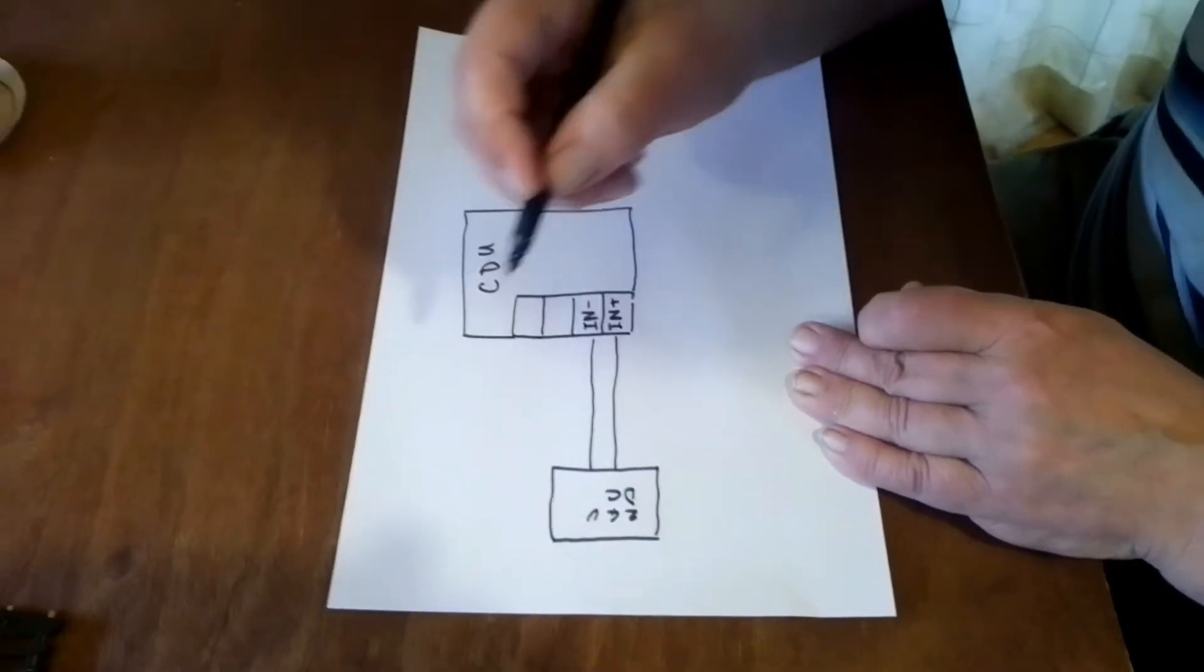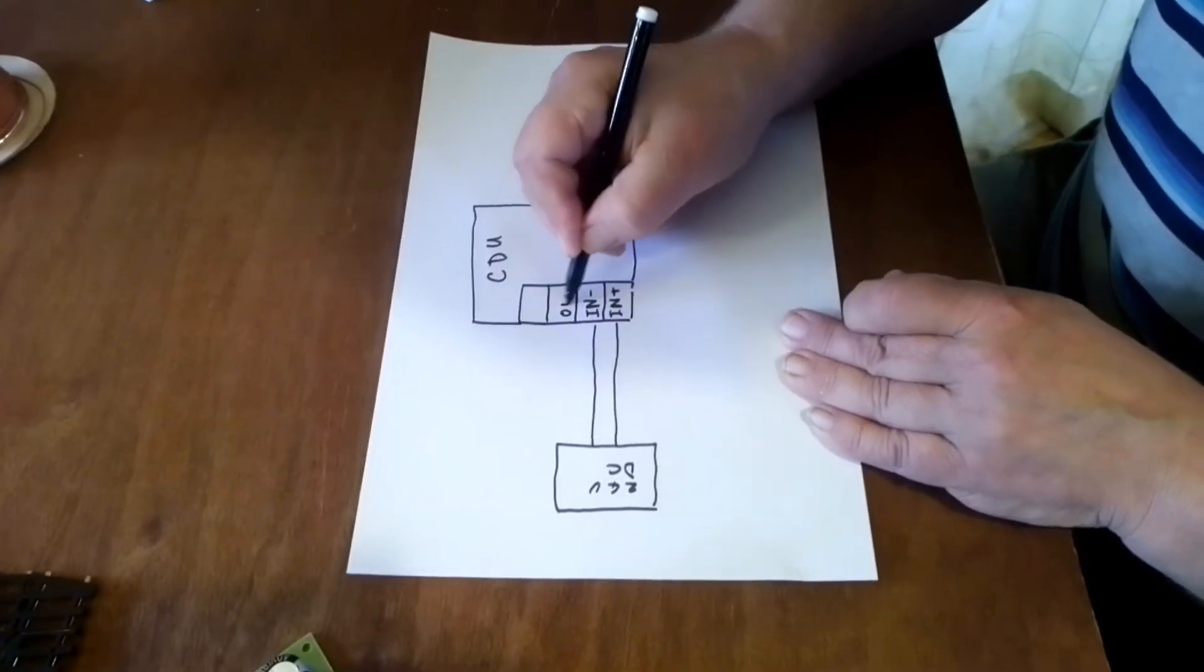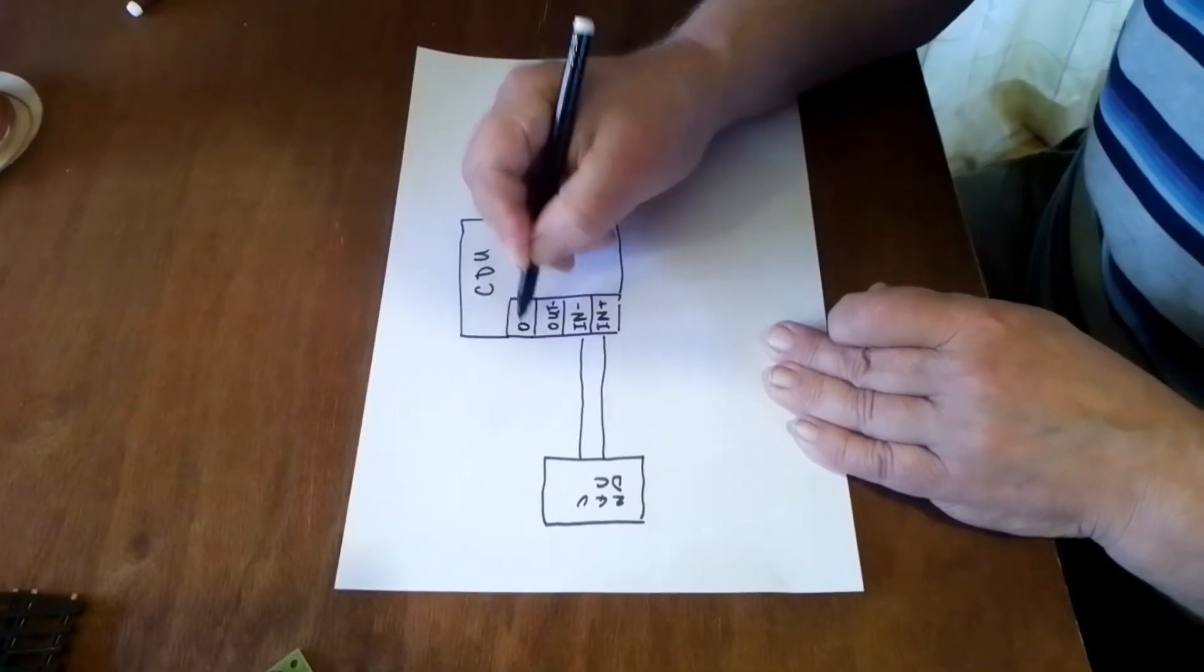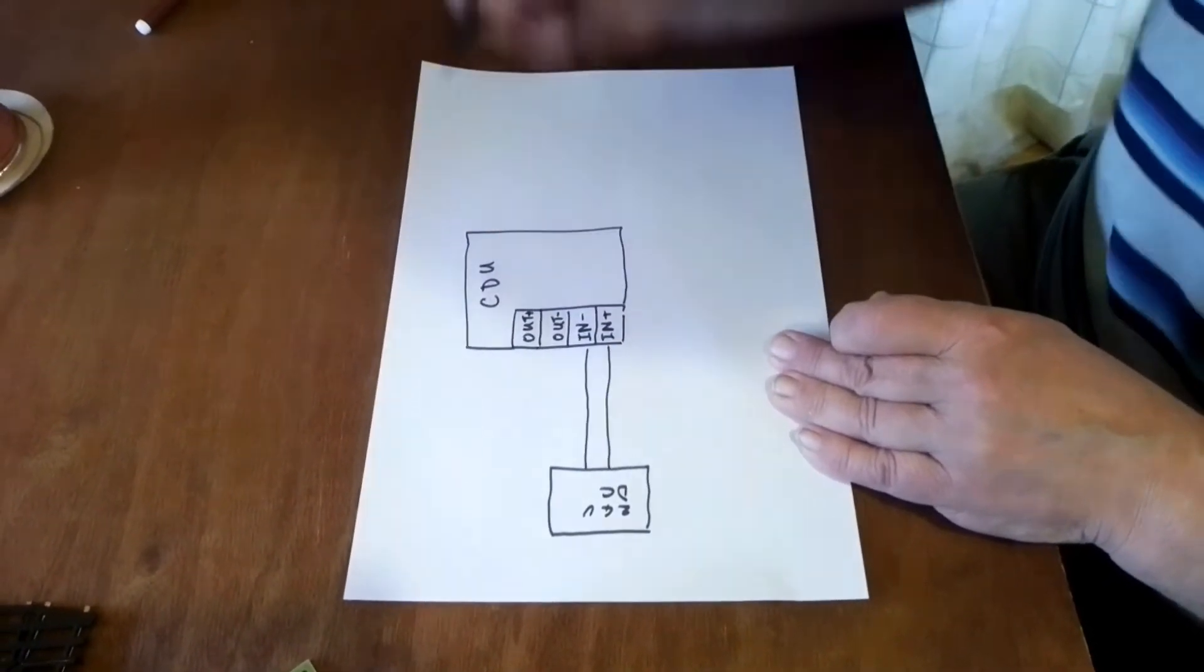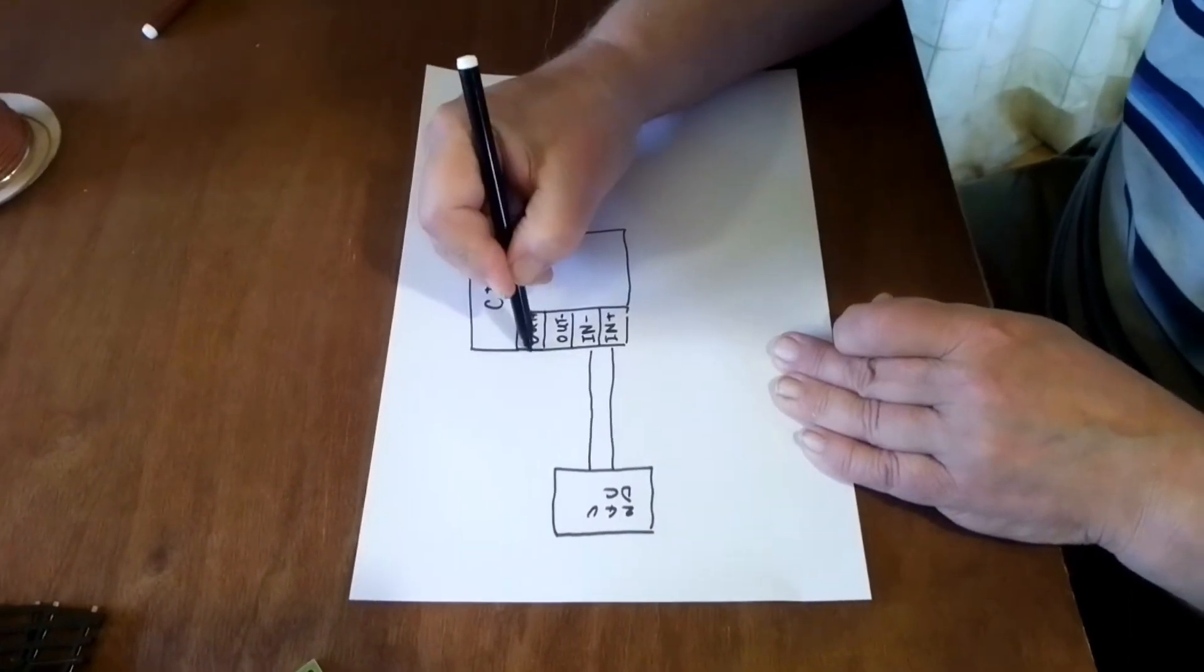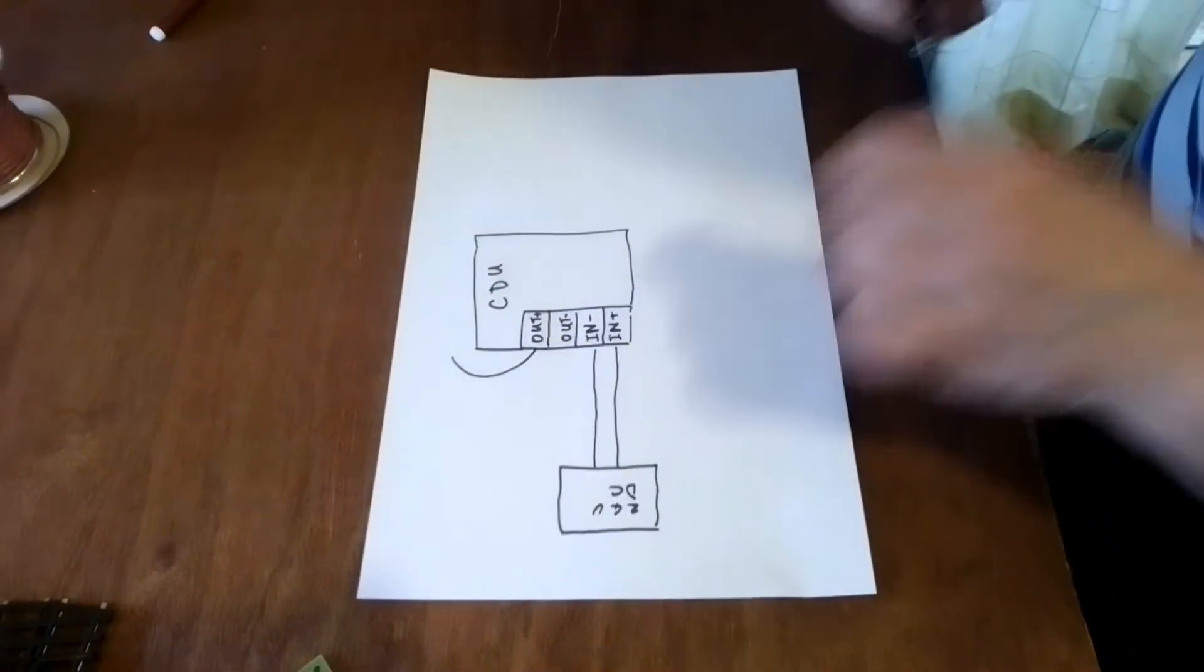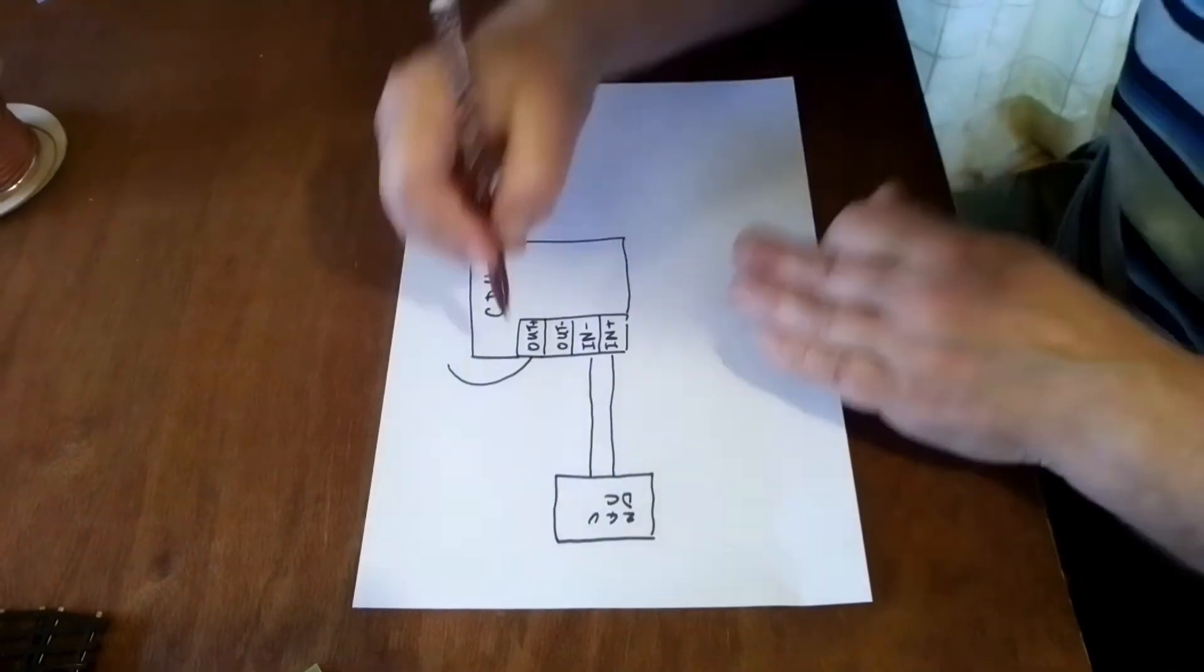Add to the CDU, we've got out minus and out plus. That out plus goes to the middle terminal on the switch.